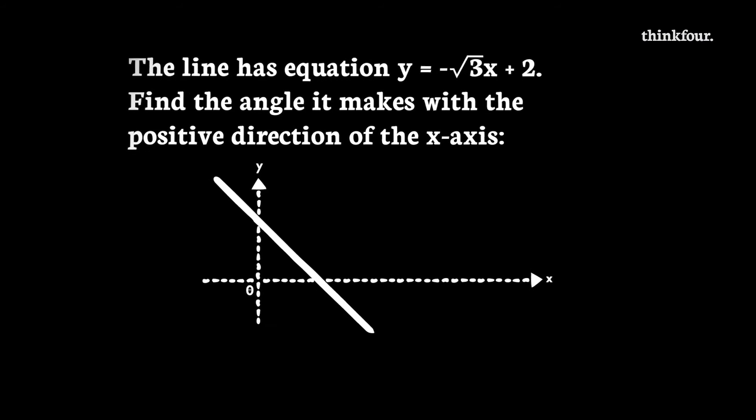There are other areas of the course where diagrams will help you. When answering questions about the angle between a straight line and the x-axis and using M equals tan theta, the diagram will help you see that you need to find an obtuse angle.